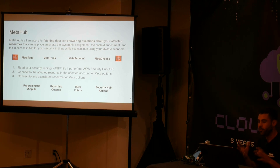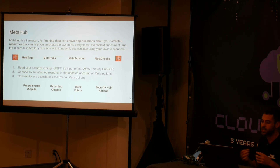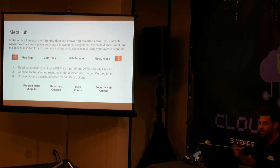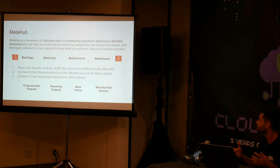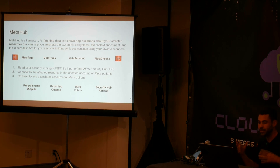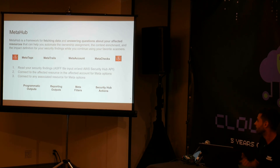How does this work? MetaHub reads your security findings from other tools. Any tool that supports generating outputs in ASFF format could be used to integrate with MetaHub, or you can read directly from the AWS Security Hub API if you are using Security Hub. Then it will connect to every affected resource in each affected account and execute these meta options on those resources. Every time there's an association — another resource connected to the affected resource — it will also execute the meta options on those associated resources as well. With all this information together, it will generate outputs you can use for integrating with other tooling, for example with an alerting system.